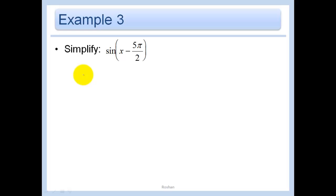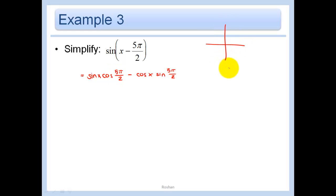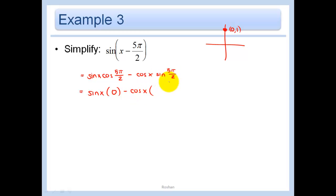Next, simplify sine(5π/2 − x). Using the sine difference formula: sine A cosine B minus cosine A sine B. At 5π/2, thinking along the unit circle: π/2, 2π/2, 3π/2, 4π/2, 5π/2 — that's back at the top, the point (0, 1). So cosine(5π/2) = 0 and sine(5π/2) = 1. Therefore sine(5π/2 − x) = 0·cosine x − 1·cosine x = −cosine x.